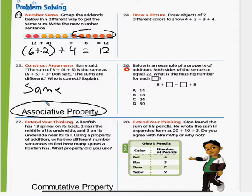And 26. Below is the example of a property of addition. Both sides of the sentence equal 22. What is the missing number for each? So you need to figure out whether it's a, b, c, or d, the missing number has got to equal 22.